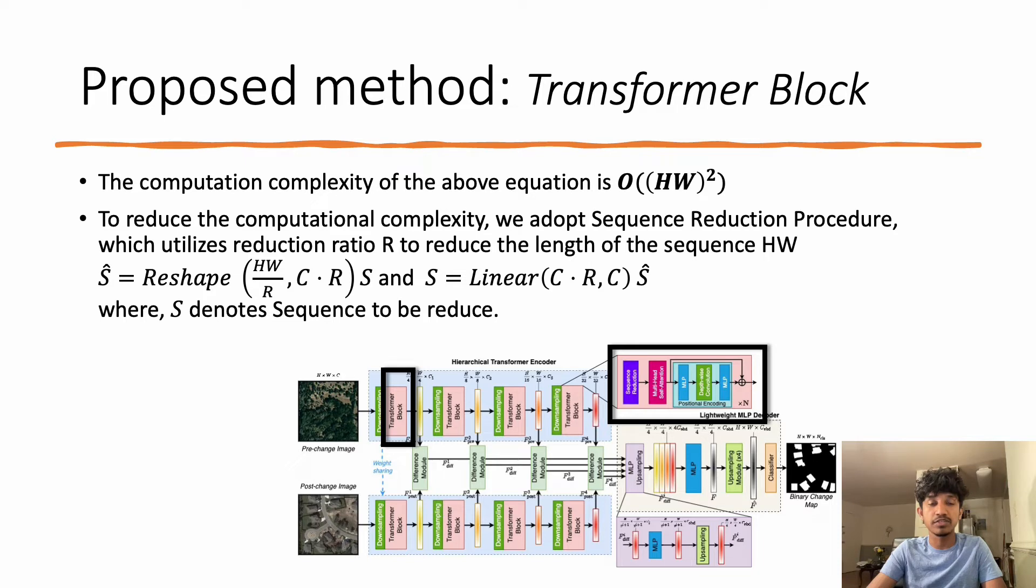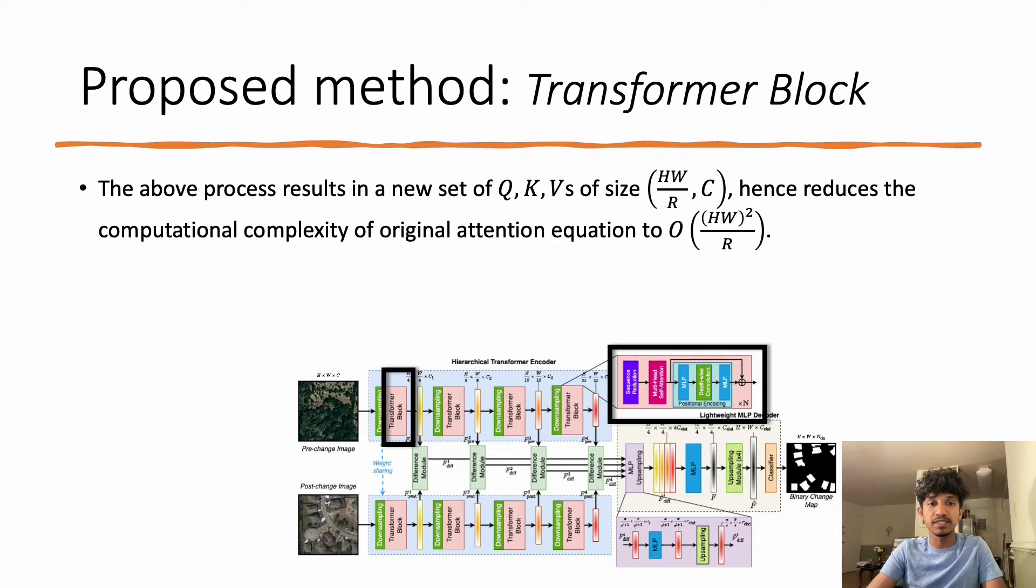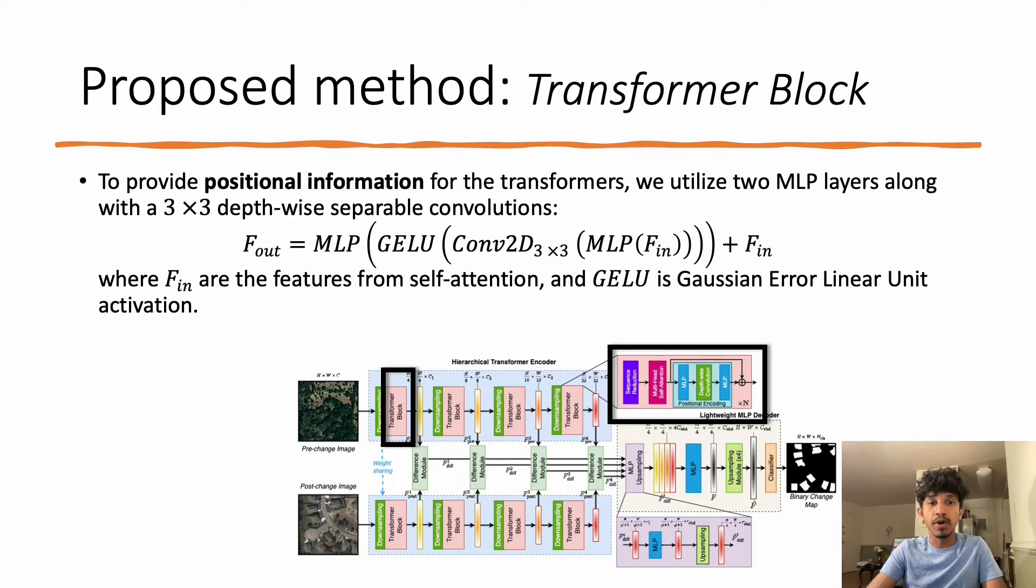Reshape denotes the tensor reshaping operation, and Linear denotes a linear layer. This results in a new set of Q, K, and V of size HW/R × C, hence reduces the computational complexity of the original attention equation to the order of HW² / R.